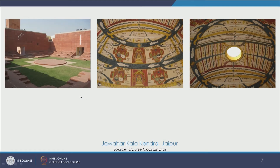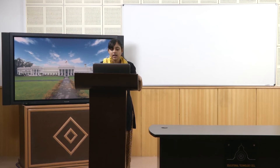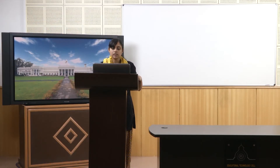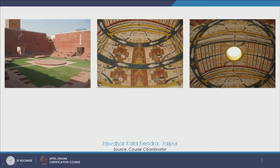This is the very famous Jawahar Kala Kendra in Jaipur. It is a multi-art centre designed by Charles Correa, the very famous Indian architect. It has several art forms and the inspiration for the plan came from the original plan of the Jaipur city. It has 9 squares with the central square kept open, and we see a lot of art forms here which reflect the cosmos, the universe, the way of life, and different art forms which express day-to-day life. It is a very beautiful and highly celebrated building and its architecture is very inspiring.